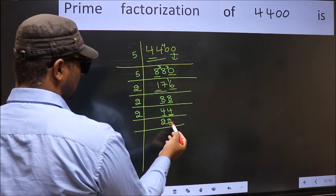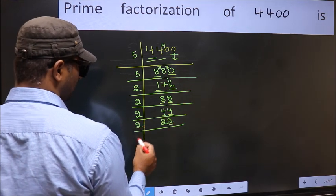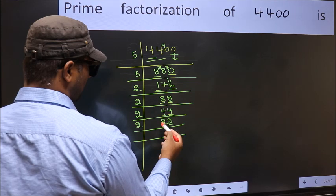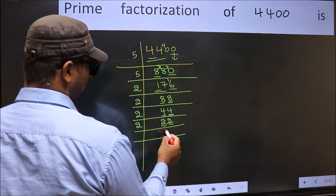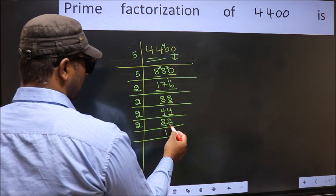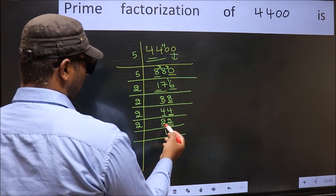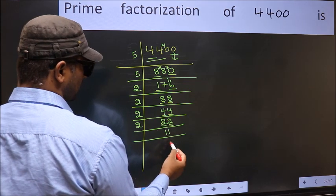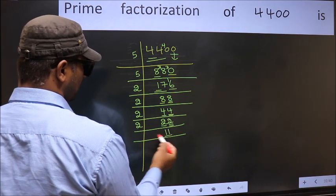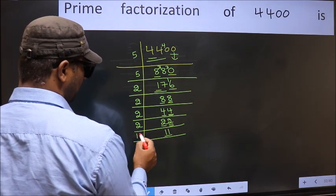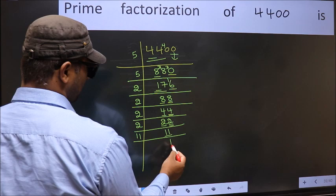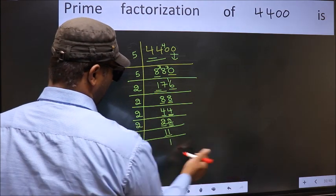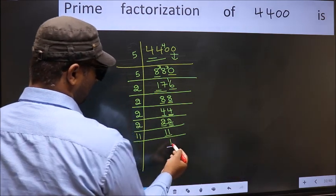Now the last digit is even, so take 2. First number 2. When do we get 2 in the 2 table? 2 ones = 2. The other number 2: when do we get 2 in the 2 table? 2 ones = 2. Now here we have 11. 11 is a prime number, so 11 ones = 11. So we get 1 here.